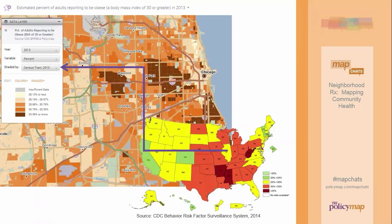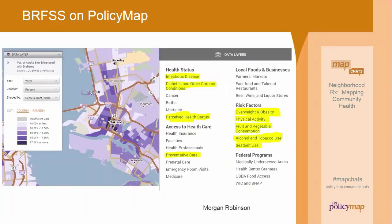Each census tract's estimate is based on the number of adults within each race, income, and age category whose reported height and weight fall within the obese category. The estimates are just estimates, and using this sort of model introduces a great deal of uncertainty. But we hope that our efforts to scale the data to different sized communities empowers people to examine these issues in greater detail in their towns and neighborhoods and work to reduce disparities. You can access this data as well as tens of thousands of other data indicators on PolicyMap, so definitely sign up for a trial if you don't have access already.